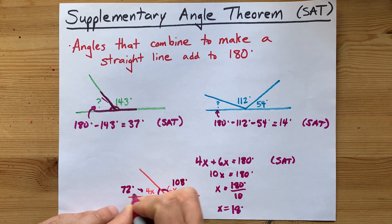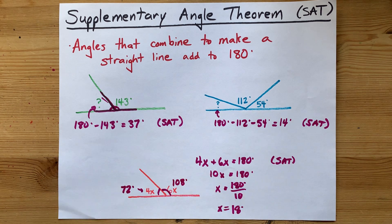And 6 times 18 is 108. Nice. 72 and 108 do add to make 180.